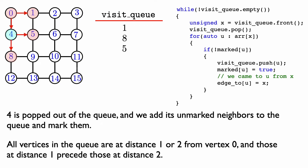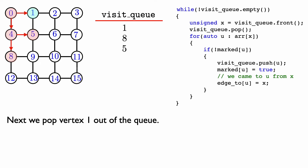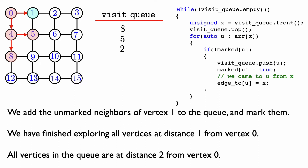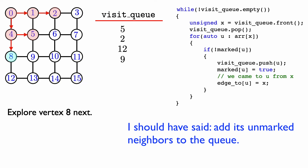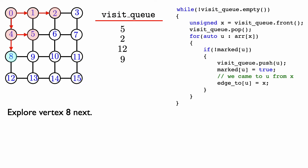And those at distance 1 come first. In the next iteration we process vertex 1, pop it out of the queue, and add its unmarked neighbors. Since vertex 0 and vertex 5 are already marked, we just add vertex 2 to the queue, indicating we visited vertex 2 from vertex 1. Then we process vertex 8, pop it out, and add vertices 12 and 9 to the queue, marking edge2 for both to indicate they were visited from vertex 8.